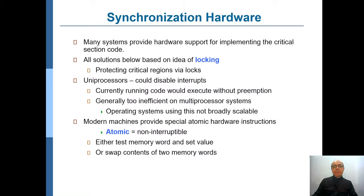In many systems, some hardware support is provided to implement critical section solutions. In all of these solutions you will always have some locking concept to protect the critical sections. In a uniprocessor system with one core, you can simply disable interrupts so the timer interrupt is disabled, the scheduler cannot do a context switch, and there is no preemption. This is typically very inefficient for multi-processor systems because you have to deal with interrupt enabling and disabling for all processors, and it will not be scalable — most processes will have to sit idle.